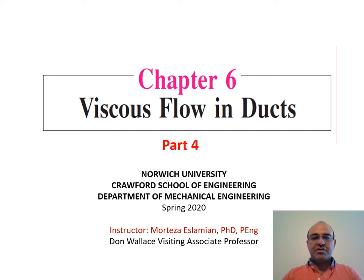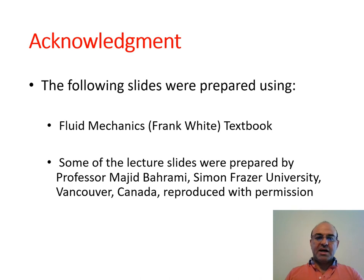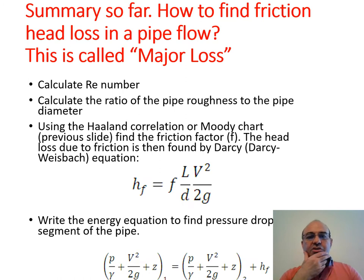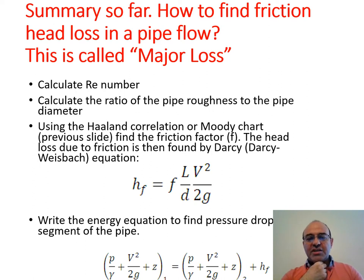We're going to do the last part of Chapter 6, Part 4: viscous flow in ducts and pipes. In the previous section, we talked about how to find friction head loss in a pipe flow, which is called the major loss — the loss due to friction and viscosity.